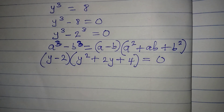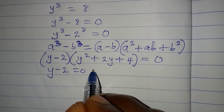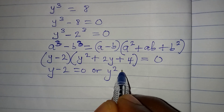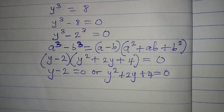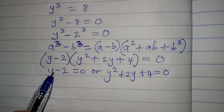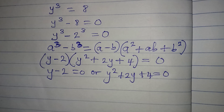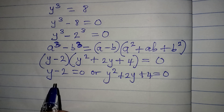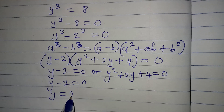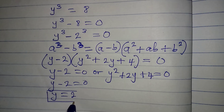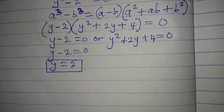Now we apply the zero product property, which says either y minus 2 equals 0, or y squared plus 2y plus 4 equals 0. Taking the linear equation first: y minus 2 equals 0, meaning y equals 2. This is the first solution, and it is a real solution.